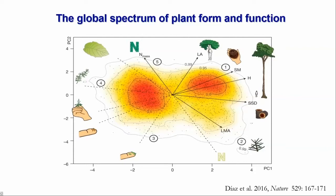This plane, which we name the global spectrum of plant form and function, has two major axes of variation. One axis reflects the size of whole plants, leaves, and seeds — going from small plants with small leaves and tiny seeds all the way to very tall plants with large seeds and large leaves, from wheat to Brazil nut. The second major dimension is a leaf resource economics axis, from conservative slow-living leaves like those of holly or the Australian hakeas, all the way to acquisitive, tender, short-lived leaves like those of basil.